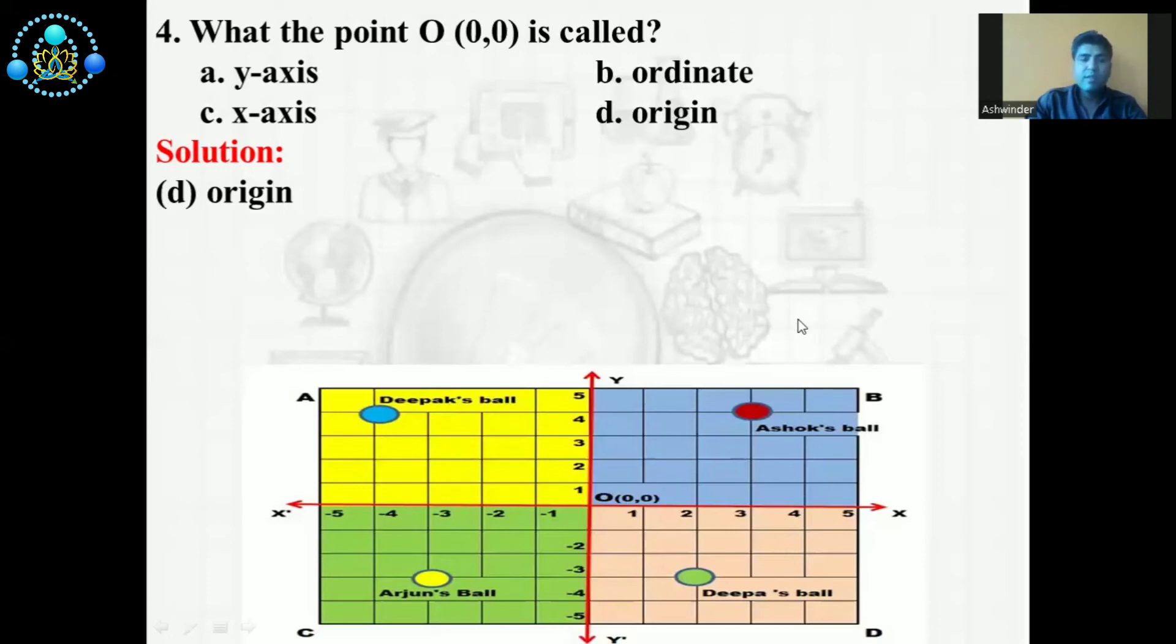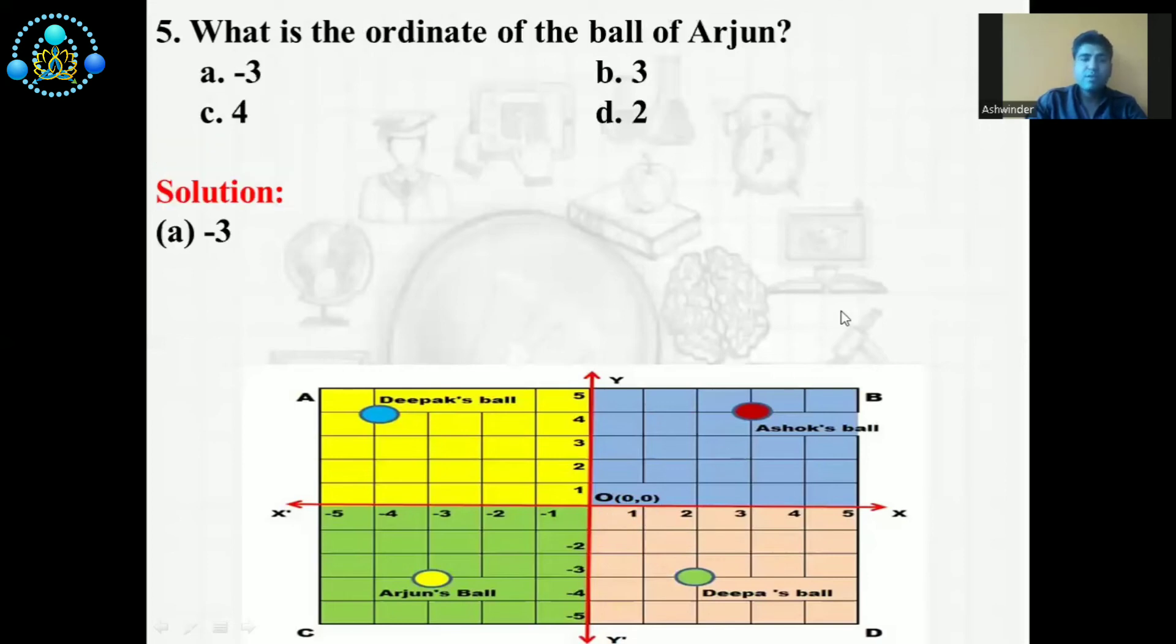So the correct answer is D, origin. We know very well the point O (0, 0) is called the origin. Now we discuss the last question.